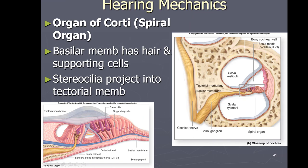Zooming in, we have the scala vestibuli, scala tympani, scala media, vestibular membrane, and basilar membrane. On the basilar membrane sits the apparatus that allows us to hear: the organ of Corti, sometimes called the spiral organ because it spirals throughout the cochlea. The organ of Corti has hair cells similar to those discussed earlier — each with a kinocilium and stereocilia — and on top there's a gelatinous-like layer called the tectorial membrane.